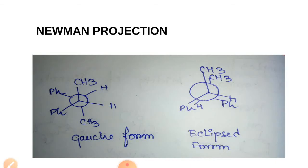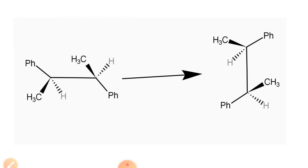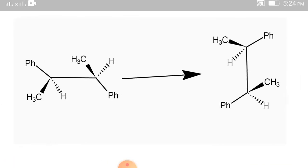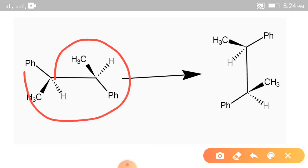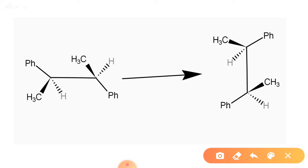Now, these projections are interconversional — flying wedge to Fischer projection. For the compound 2,3-diphenylbutane, its flying wedge representation will be like this. CH3 is in the above plane and hydrogen is in the below plane for this compound. We can also draw CH3 in the below plane and hydrogen in the above plane — that actually depends on its RS nomenclature.